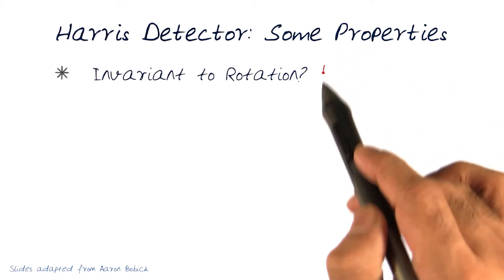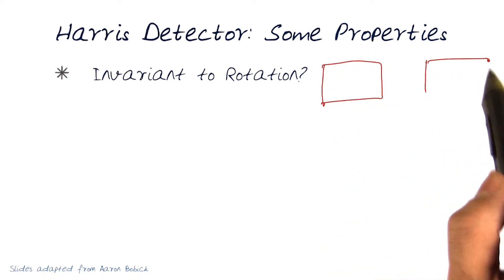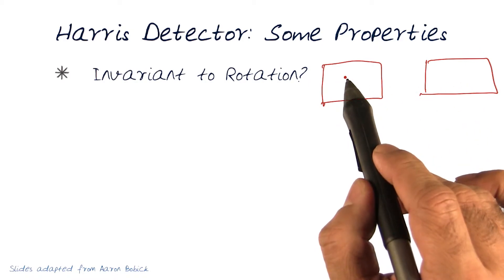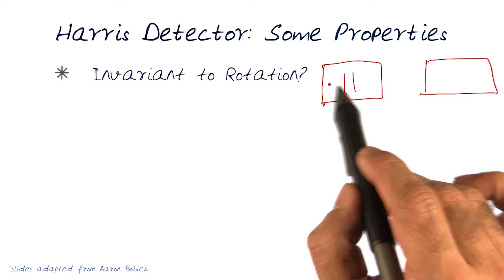What that basically means is, let's say I have one image and I have another image. In this image, let's say I have something like a plus sign here.